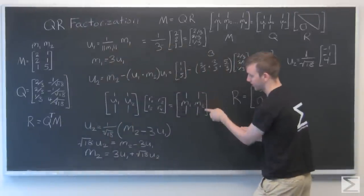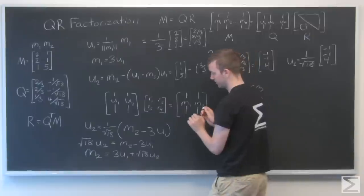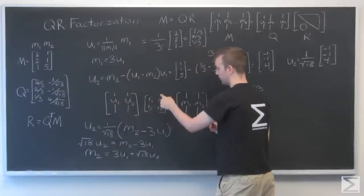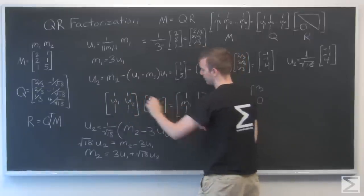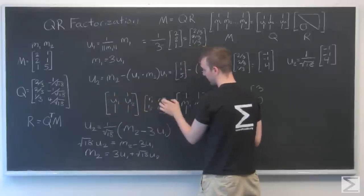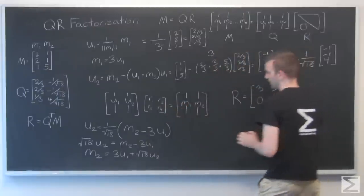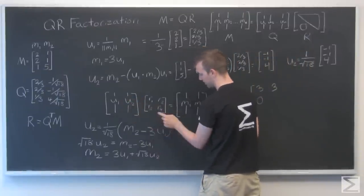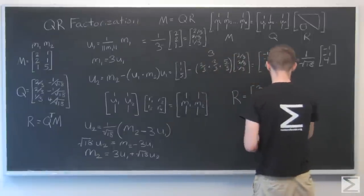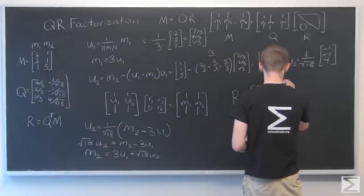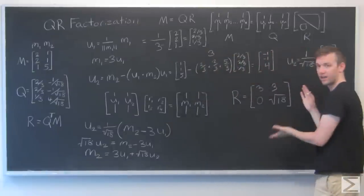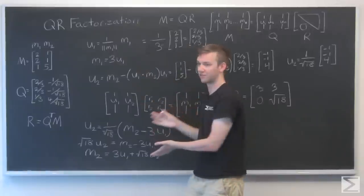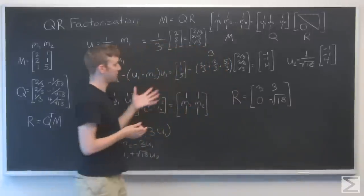So that means m2 right here is equal to, when we multiply it, all of these rows multiplied by this column right here. So all of the u1's get multiplied by 3, so there's got to be a 3 right there. And all of the u2's get multiplied by the square root of 18, so there needs to be a square root of 18 right there. And that is our result R. And as you can see, we had really calculated it in doing this Gram-Schmidt process.